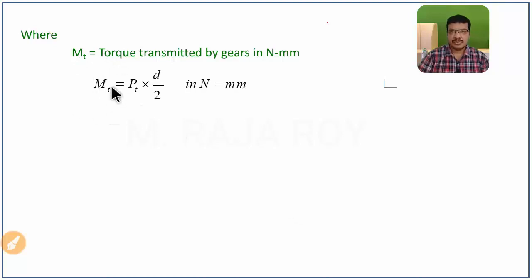Now mt is known. How to get Pt? mt = Pt × d/2, where d is pitch circle diameter. Rearrange this equation: Pt = 2mt/d. Directly you get Pt value in newton, where d value is in mm.